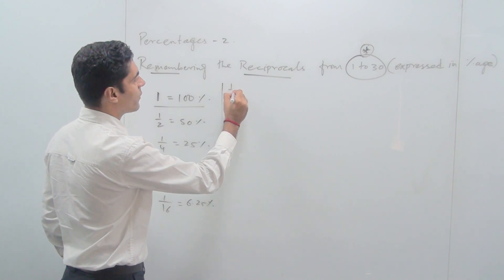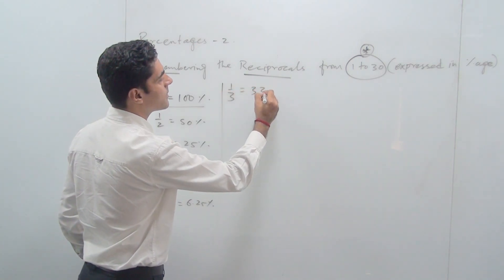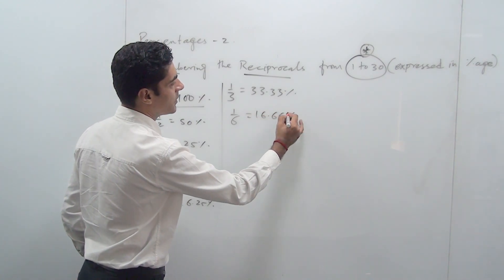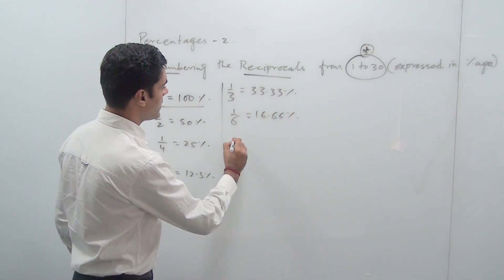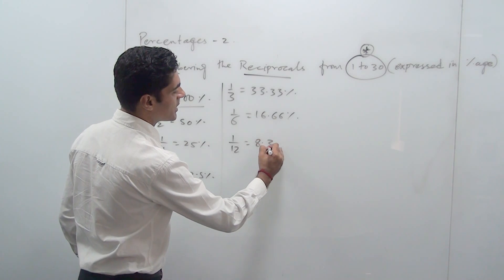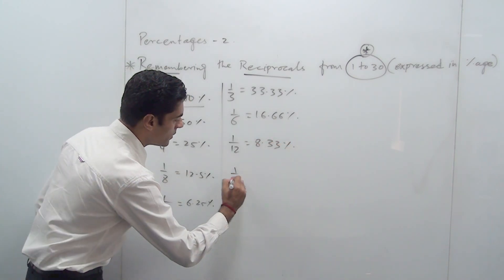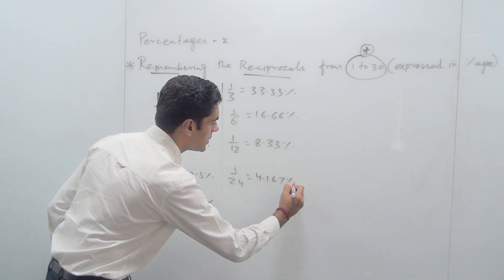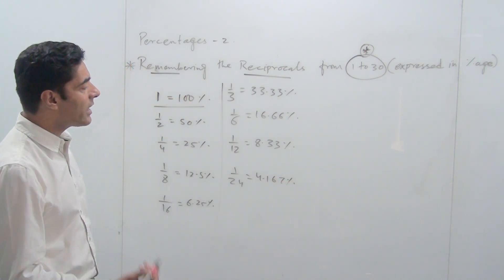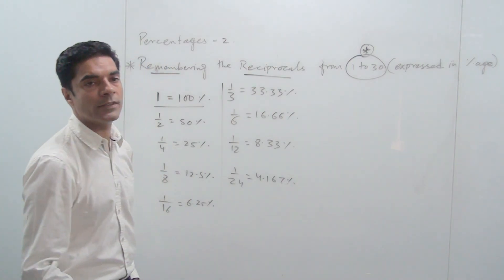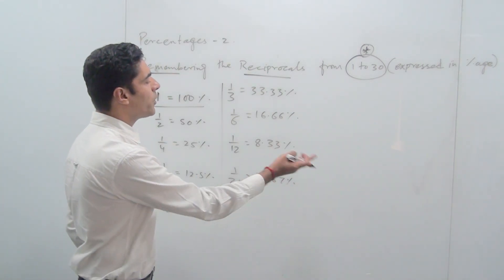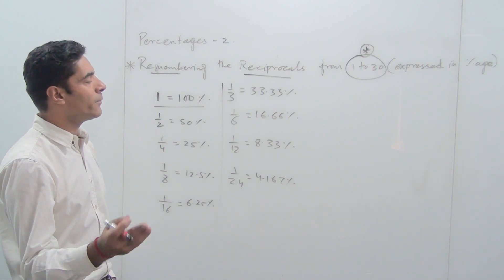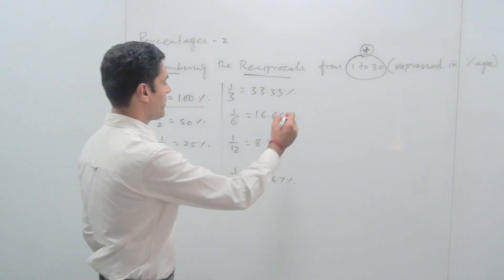Similarly, 1/3 is 33.33%, so 1/6 is half of 33.33 which is 16.66%, and 1/12 is half of 16.66 which is 8.33%. So 1/24 will be half of 8.33 which is 4.167%. This means if you are ever stuck in a calculation involving 8.33% of something, rather than computing 8.33%, you can directly write it as 1/12, because 1/12 equals 8.33 divided by 100.